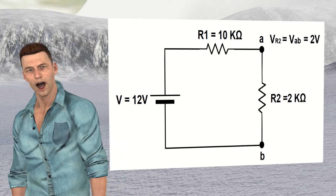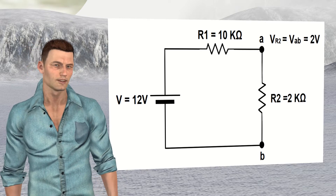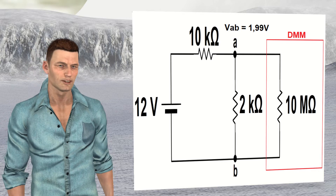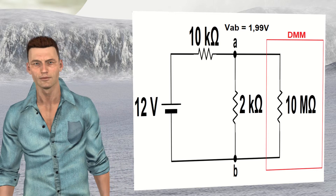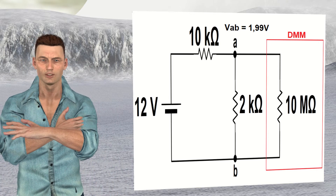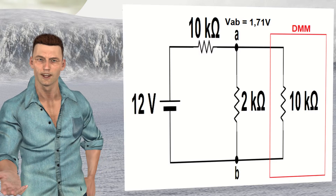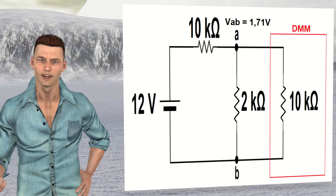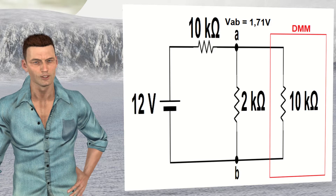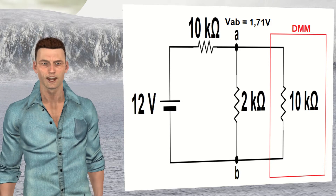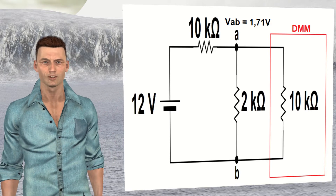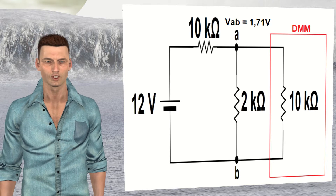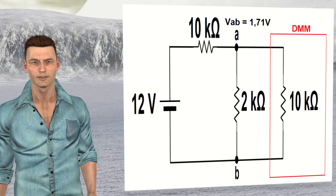Let's now measure the voltage between the ends of R2 with two voltmeters: one with an input impedance of 10 mega ohms and the other with an input impedance of only 10 kilo ohms. In the first case, Ohm's law predicts that the voltage between points A and B is equal to 1.99 volts, and the current supplied by the battery is practically 1 milliamp. With the second multimeter of 10 kilo ohms, Ohm's law predicts the voltage between points A and B is 1.71 volts, and the current supplied by the battery will be approximately 1.03 milliamps. As we can see, the voltage has been reduced by almost 0.3 volts, which represents more than 14 percent.